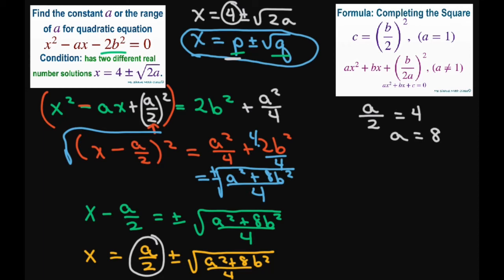And then this 2A is going to equal all of this. Right there. So 2A equals A squared plus 8b squared divided by 4.